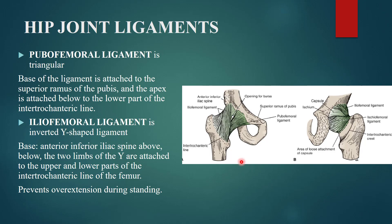The first ligament is the pubofemoral ligament. It is triangular in shape. Its base is attached to the superior ramus of the pubis — hence 'pubo' — and its apex is attached to the lower part of the intertrochanteric line of the femur — hence 'femoral'.